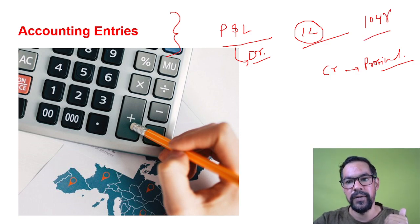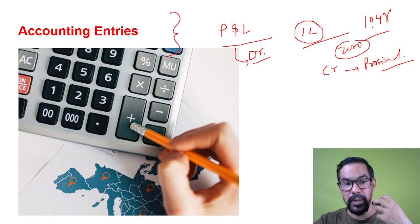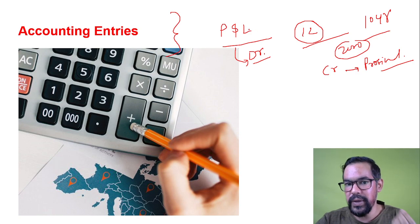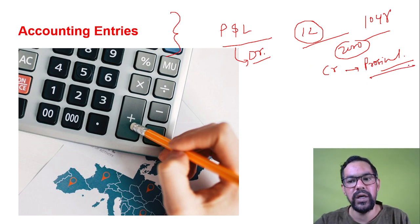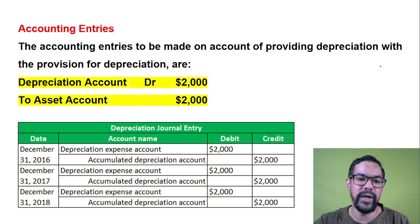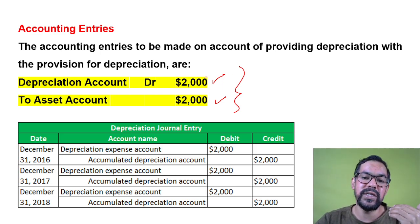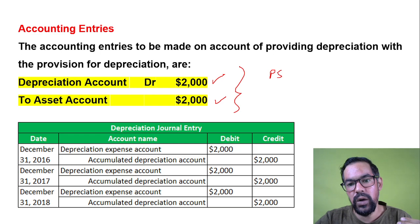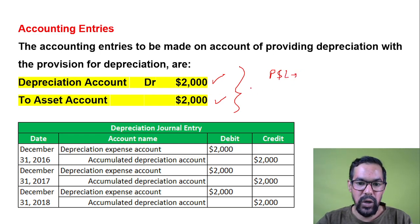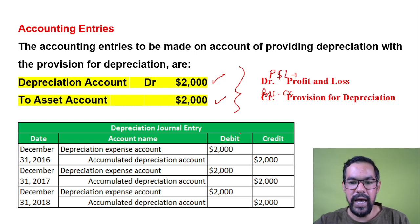For example, if a machinery with a 10-year life and zero scrap value depreciates by 1 lakh per year, after 10 years you must repurchase it. The P&L account is debited and the provision for depreciation account is credited. In the example shown, depreciation of 2,000 is debited to the depreciation account and your provision account is credited by 2,000.